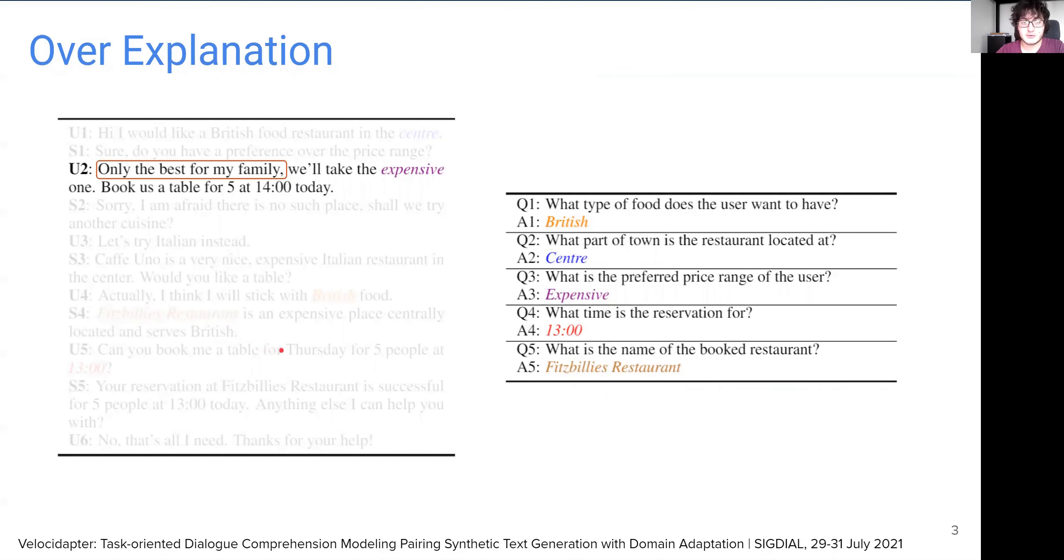And lastly, users also tend to over-explain their preferences, complicating the utterances for machine understanding.